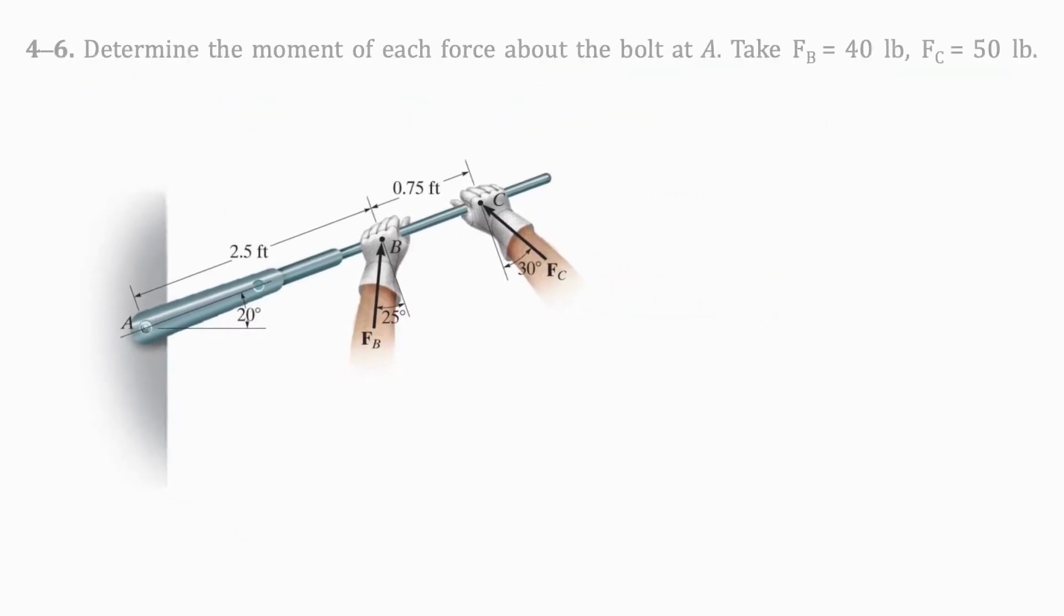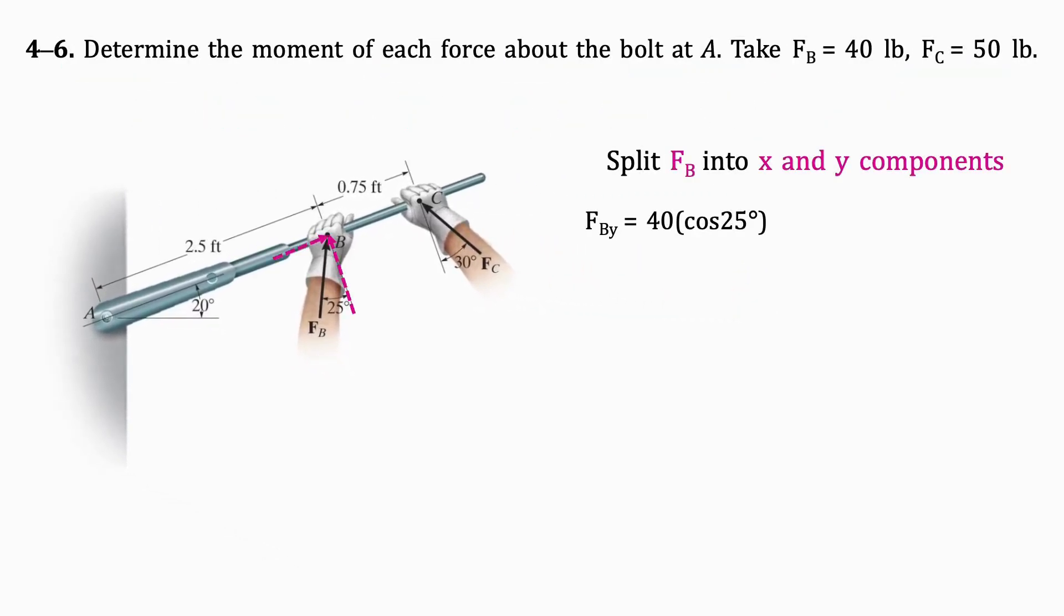First, split FB into X and Y components using the given angle. By doing so, we get FBy equals 36.25 pounds and FBx equals 16.9 pounds.